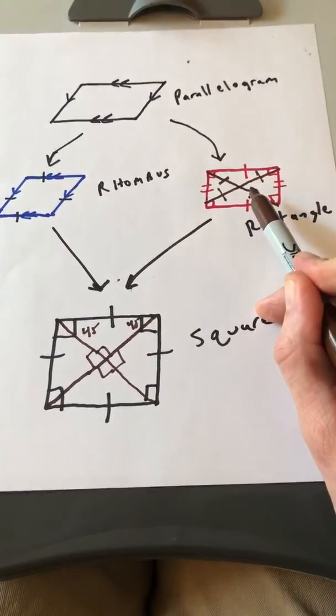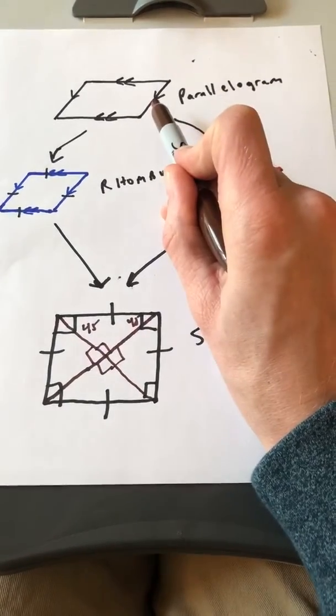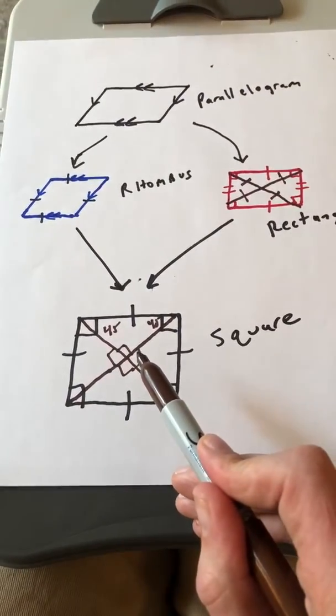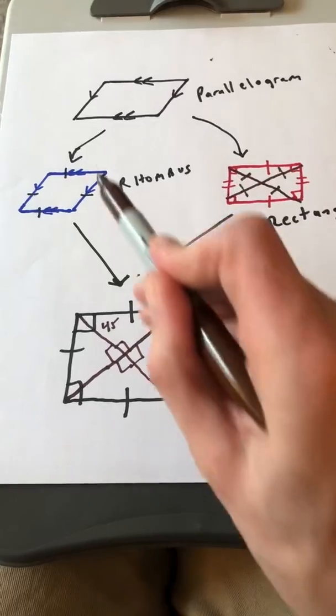If the quadrilateral is a rectangle, it's also everything above it. So it's also a parallelogram. So based on this tree here, any quadrilateral is also everything that is above it.